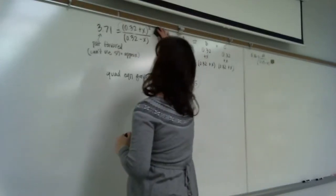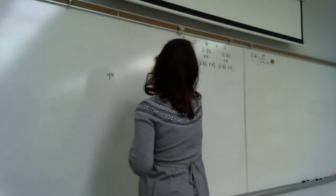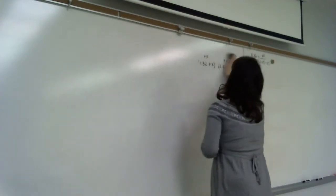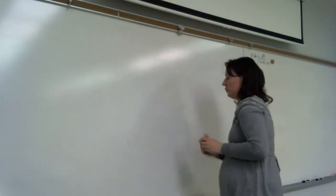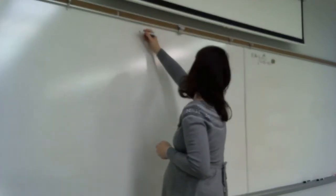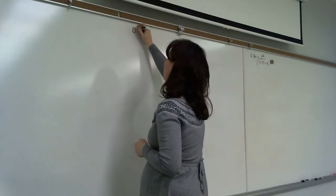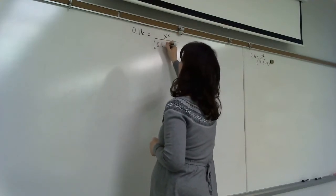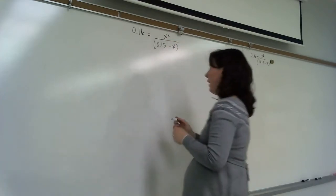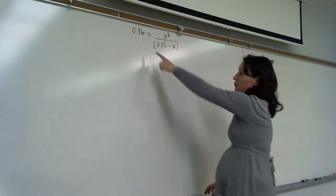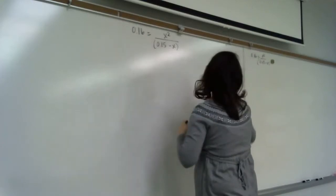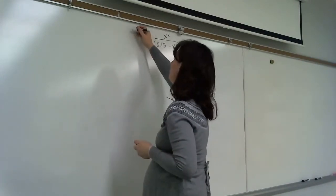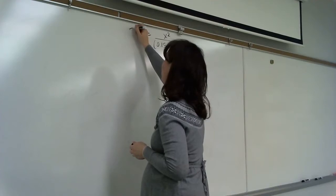Now let's do a second problem. We have 0.16 = x² / (0.15 − x). Since this is actually reactant favored we'd normally use the 5% approximation, but let's pretend the equilibrium constant is 5.1 so that it's product favored and we have to solve the quadratic.